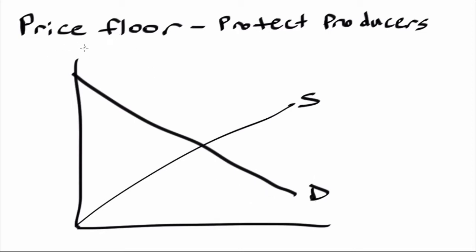In order for a price floor to be effective, the government has to set it above the equilibrium price. So first, let's look at where equilibrium is - that's where supply intersects demand, at this point. The price floor needs to be set above the equilibrium price.